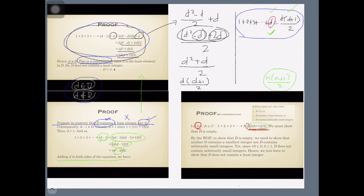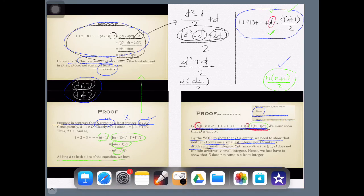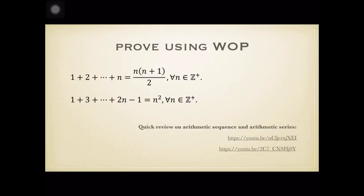That is, D does not contain a least element. Since we also showed earlier that D does not contain arbitrarily small integers, we have now proven that D is actually empty. Consequently, this means there won't be any element in this set, and therefore this expression works for all positive integers N. And so, we have proven this statement.